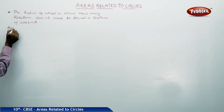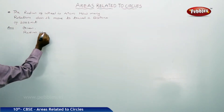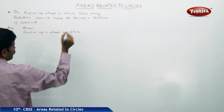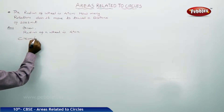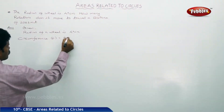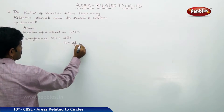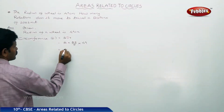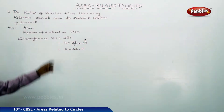Now, given the radius of a wheel is 49 cm. Immediately we have to find the circumference. Circumference C is equal to 2 pi r. That is, 2 into 22 by 7 into radius, which is 49. That is, 2 into 22 into 7, cancelling 7 — this is the circumference.